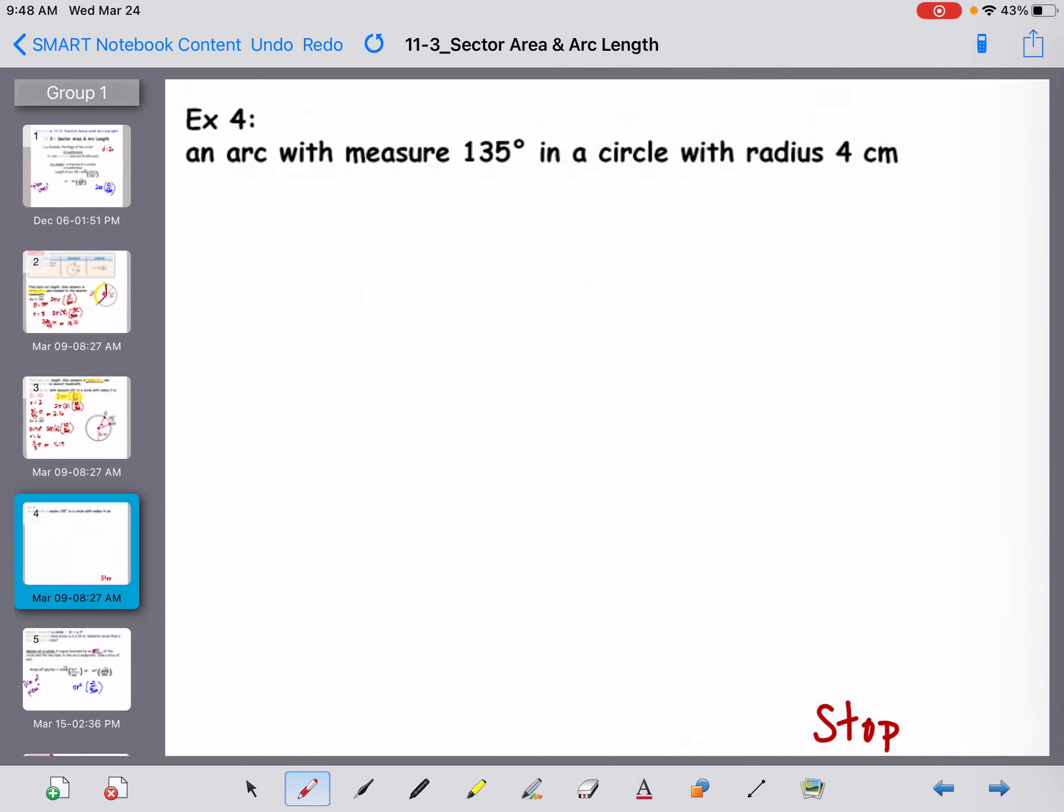One more example. An arc with measure 135 and a circle with radius 4. So theta is 135. The radius is 4. Let's actually change this problem. Let's change this problem a little bit because I haven't done one like this and I'm pretty sure you're going to have one. Let's say diameter. Let's not use 8. Let's say diameter 10.